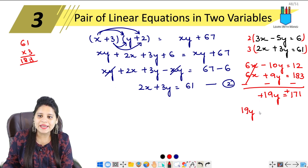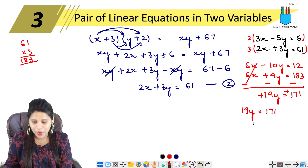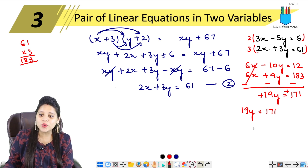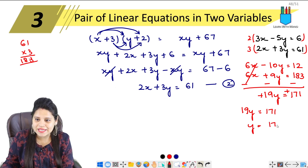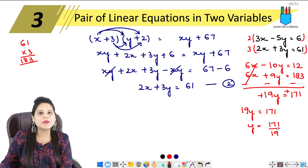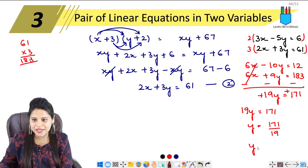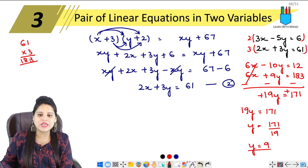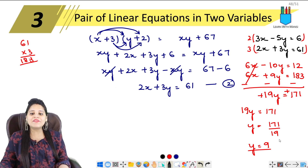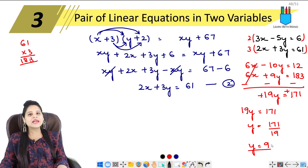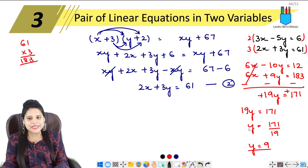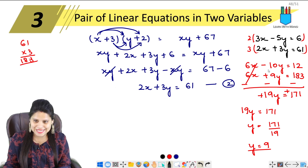So 19y = 171. Therefore y = 171 ÷ 19 = 9. So y = 9. Now that we have y's value, we can substitute it into any equation to find x.